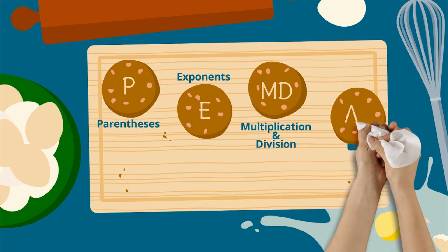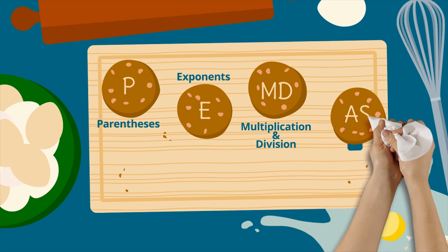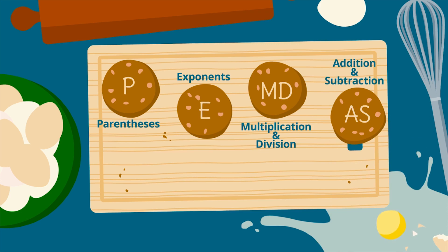Finally, A and S means addition and subtraction. They represent the last step in the Order of Operations. The rule about solving left to right also applies to addition and subtraction.